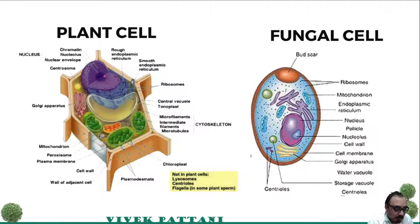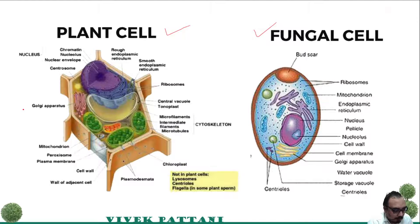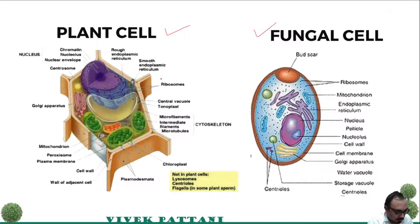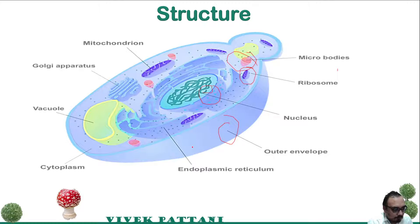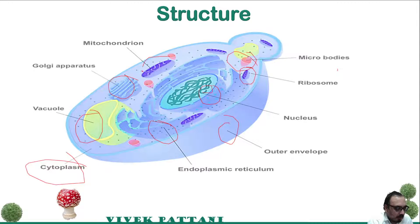The fungal cell is not similar to the plant cell. You can see the difference: the plant cell contains more apparatus because it contains various machinery required for photosynthesis. The basic structure of a fungus contains microbodies, ribosomes, nuclei in which DNA is present in an outer envelope, endoplasmic reticulum, cytoplasm, vacuoles, Golgi apparatus, and mitochondria.